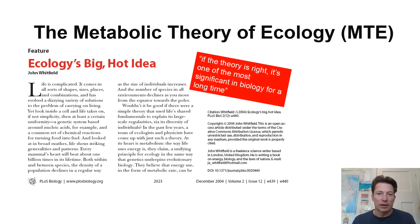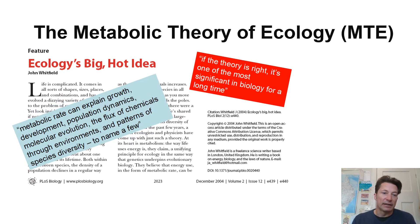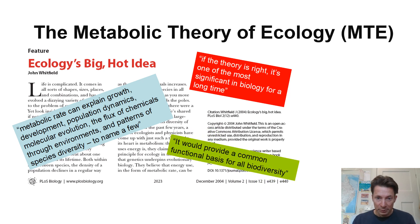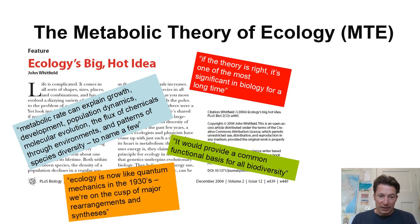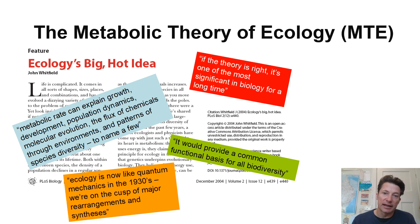Some quotes from that article: 'If the theory is right, it's one of the most significant in biology for a long time. Metabolic rate can explain growth, development, population dynamics, molecular evolution, the flux of chemicals through environments, and patterns of species diversity, to name a few. We provide a common functional basis for all biodiversity. Ecology is now like quantum mechanics in the 1930s — we're on the cusp of major rearrangements and syntheses.' There was a real great deal of excitement about the possibility of understanding ecology through metabolism and reviving physiological ecology as a discipline.